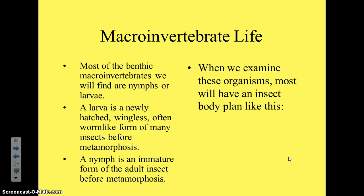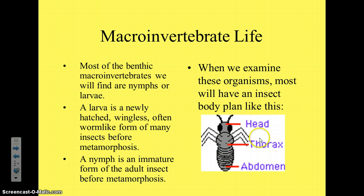Before we start, you should know what the body plan of these organisms looks like, because I'll be using terms like abdomen and thorax. The head is the part with the eyes, antenna, and mouth parts. The thorax is in the center — that's where all the legs are attached, and if they have wings, that's where the wings attach too. The abdomen is like the rear end. For humans the abdomen is in the middle, but for insects it's at the end, and it contains all the vital organs: sometimes lungs, sometimes gills, digestive organs, reproductive organs, and sometimes even the heart.